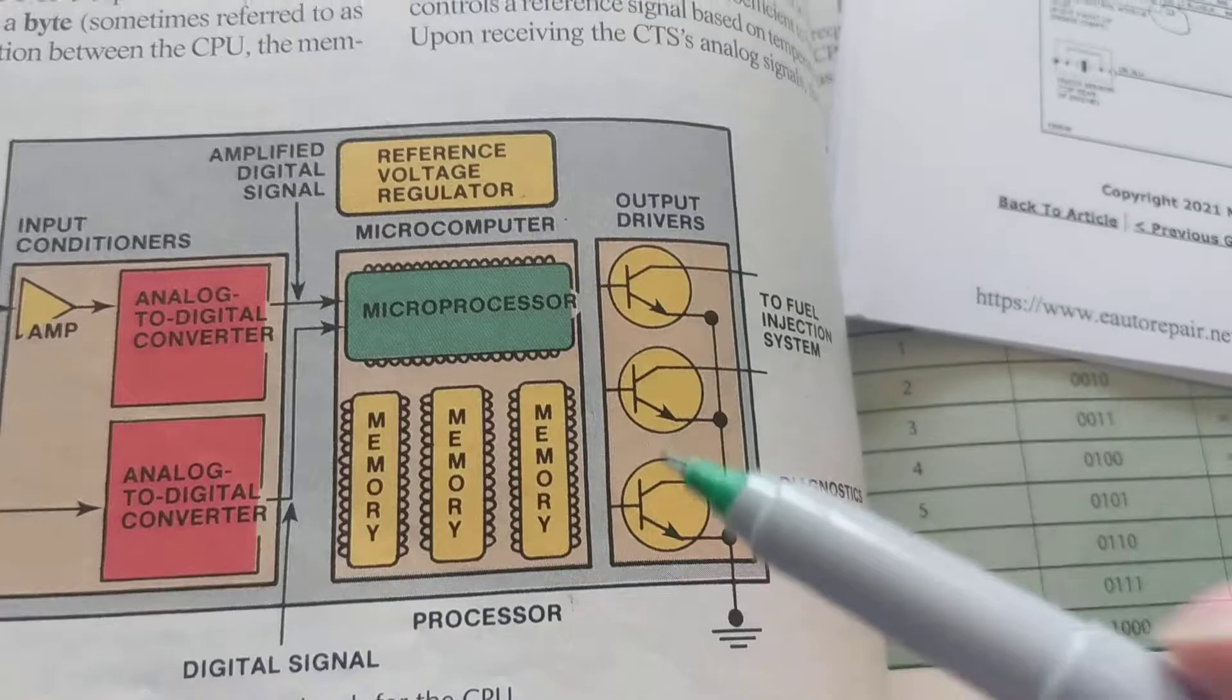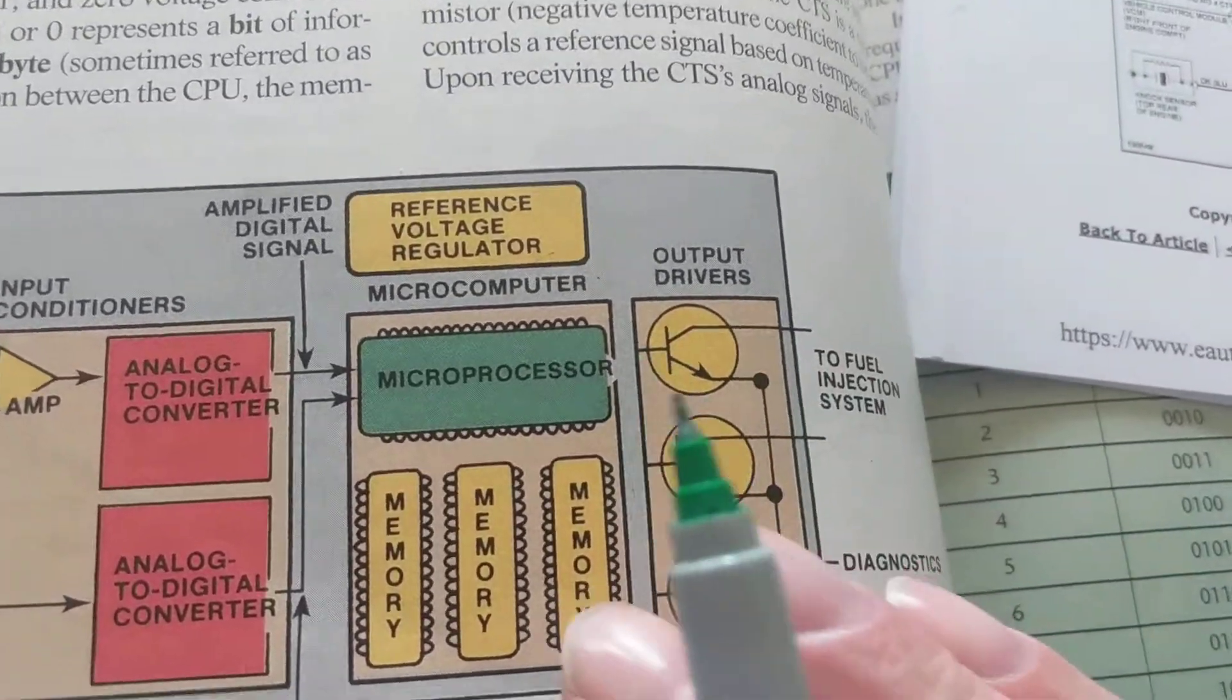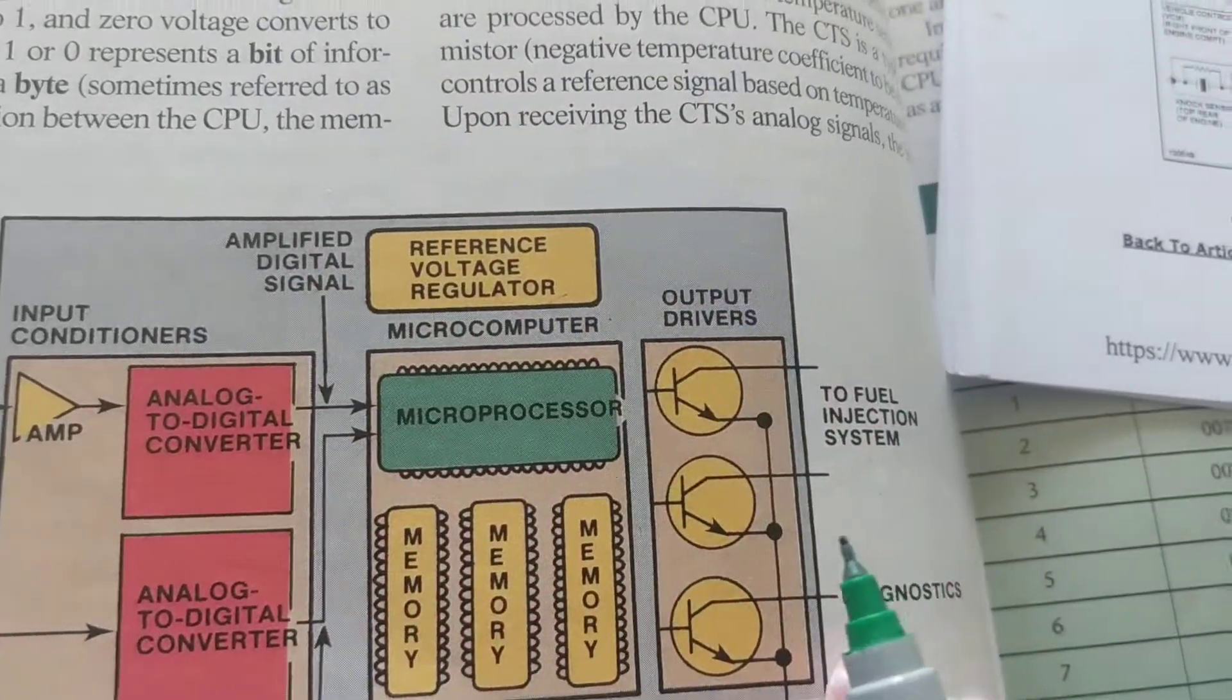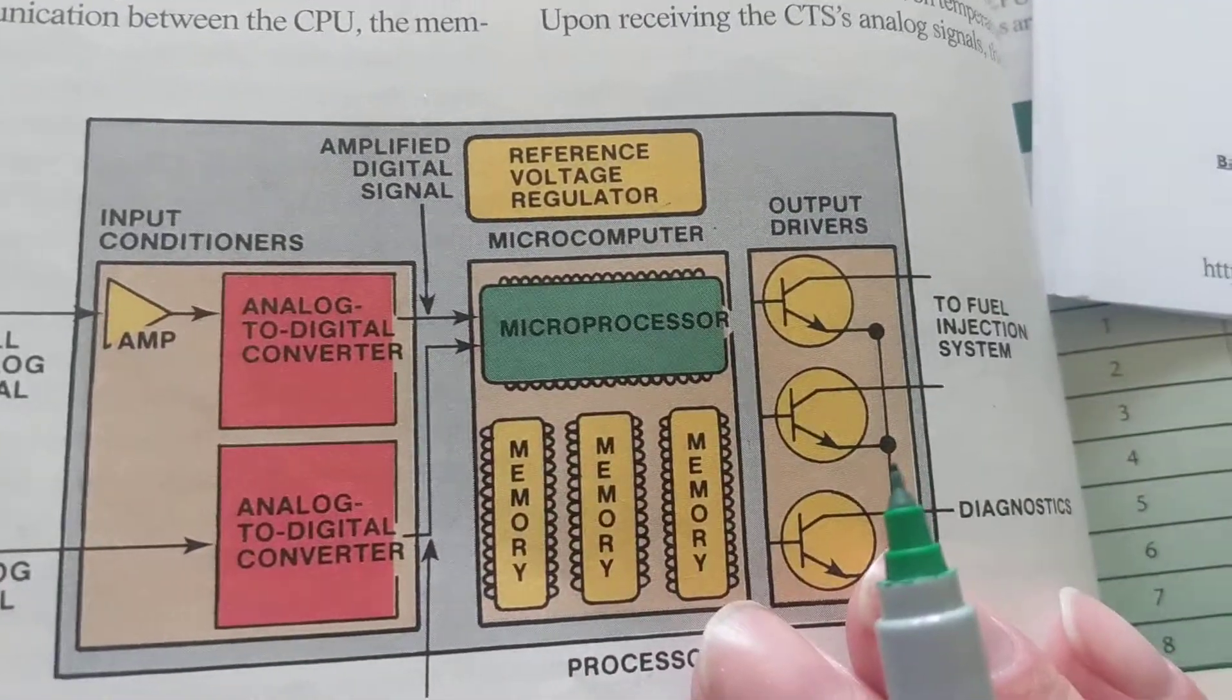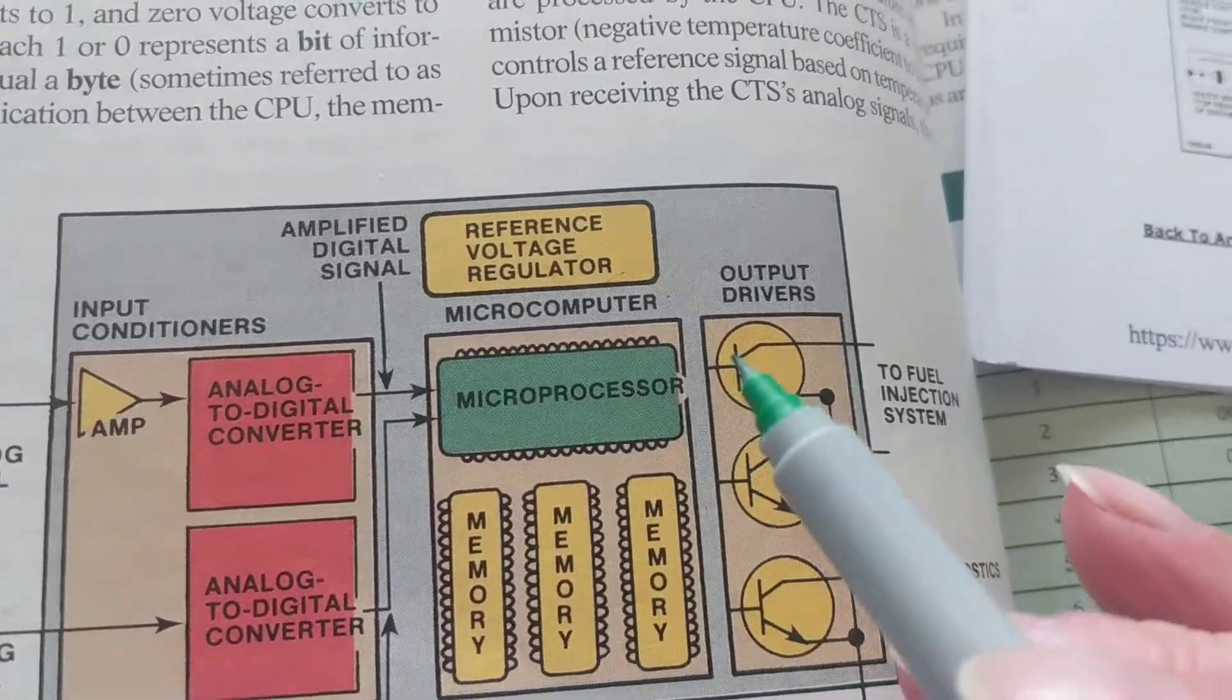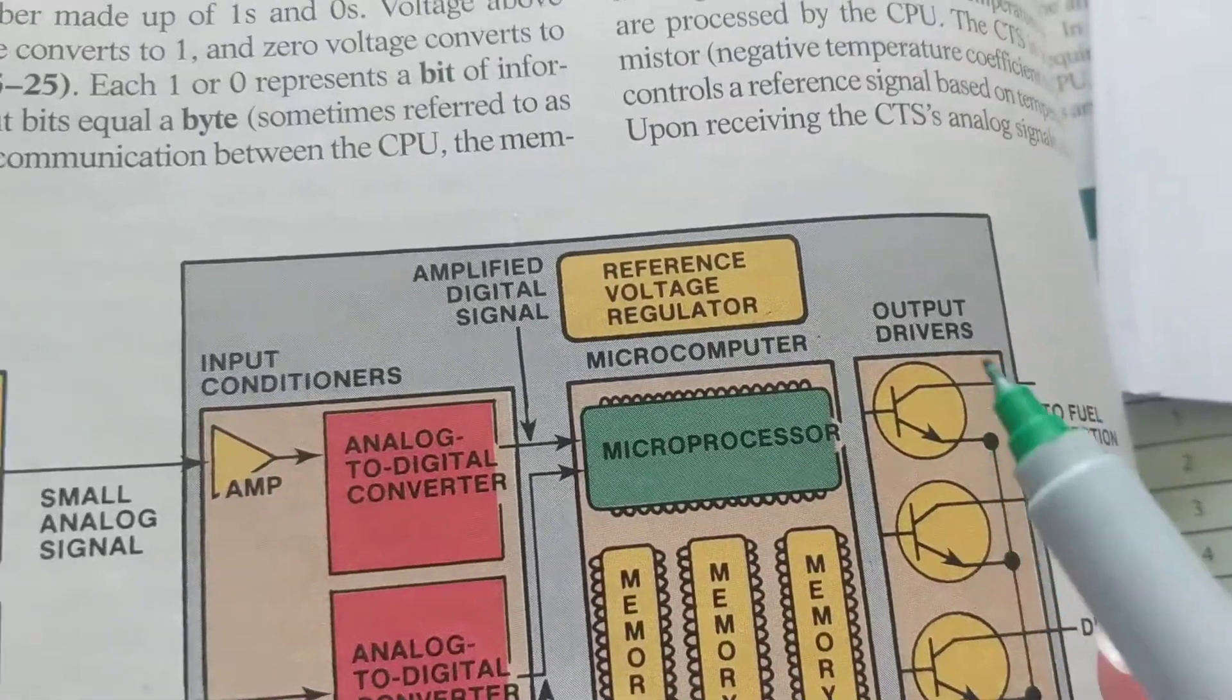The microprocessor is the brain of the gang. It is part of the PCM, part of the body control module. All these modules have memory in them. When you lose that fuse that I just showed you, you lose power.